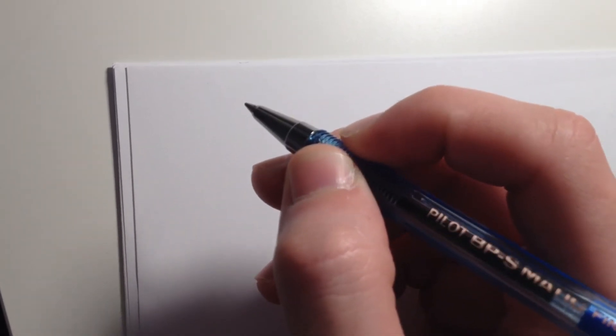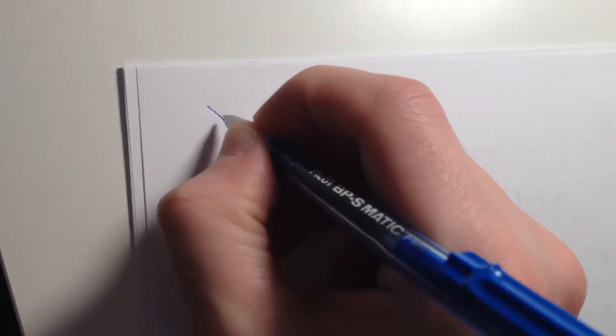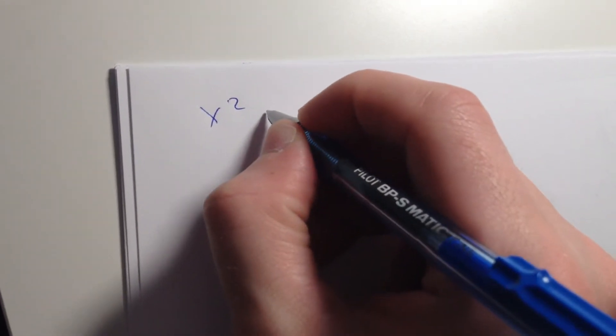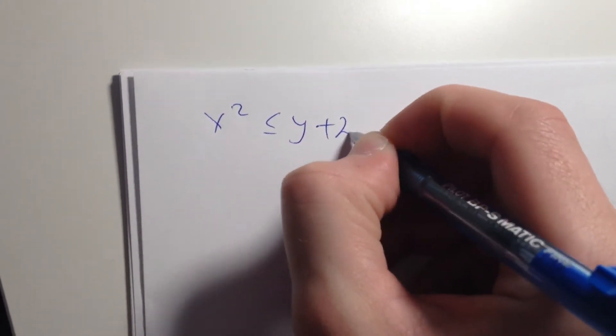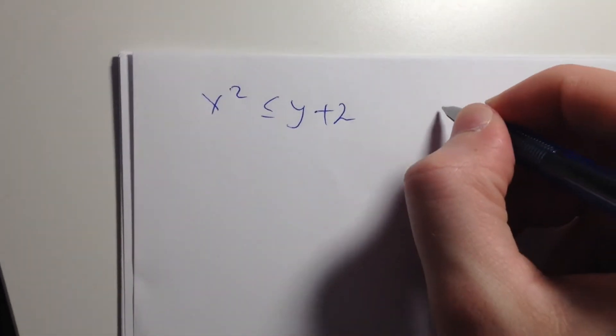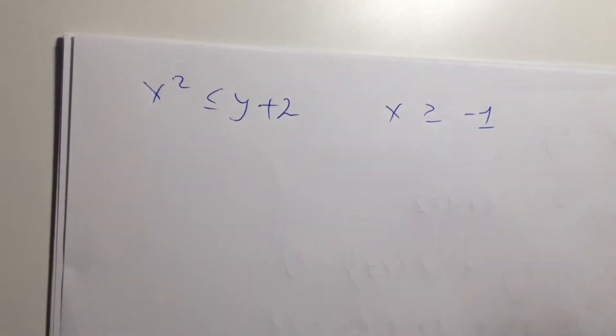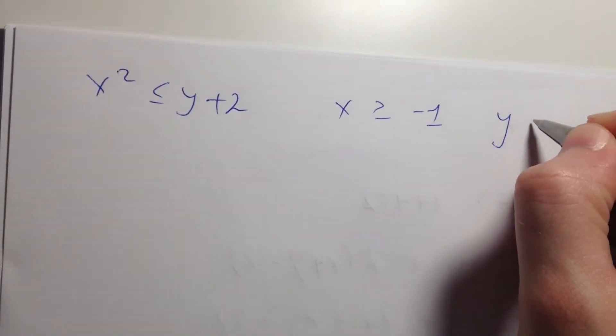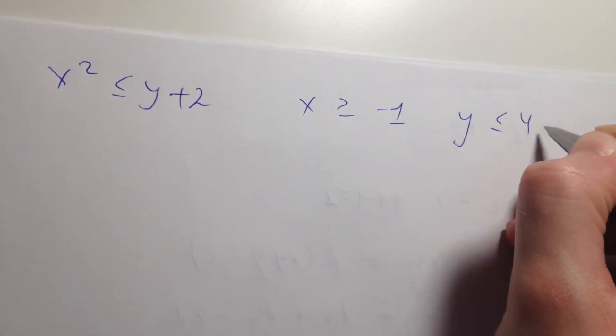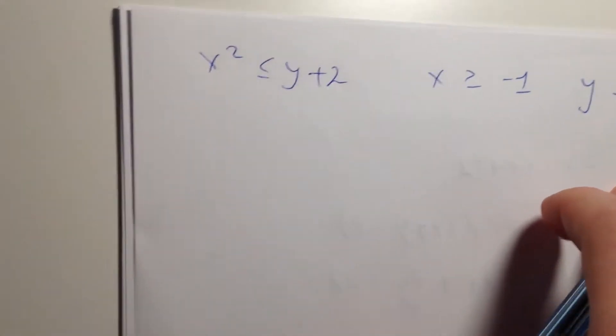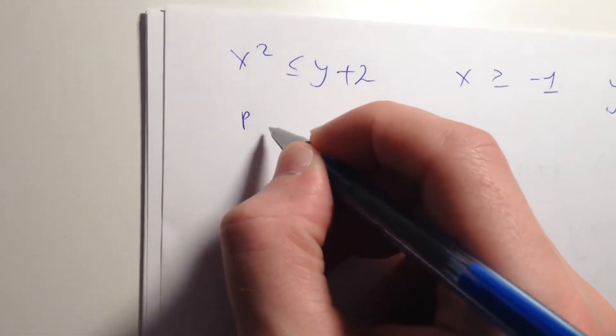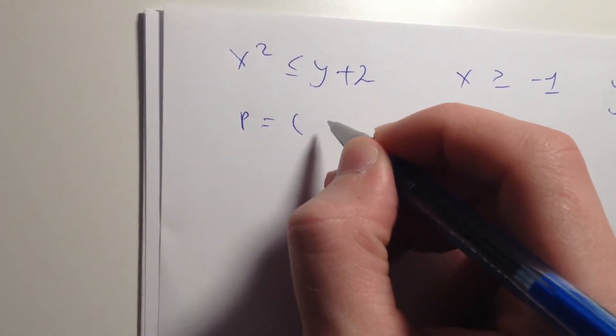So the first problem is, I want to check if our problem can be solved at all. So x squared y plus 2, x bigger or equal to 1, and y is less or equal to 4 minus x.